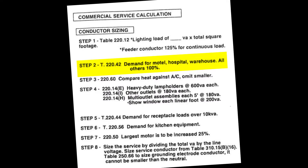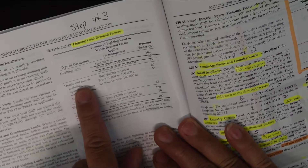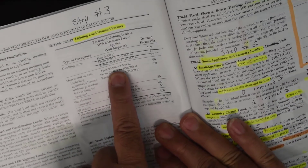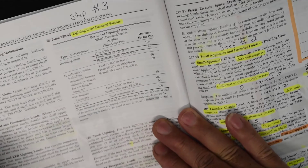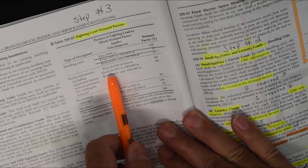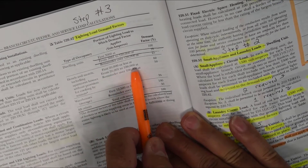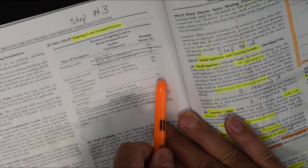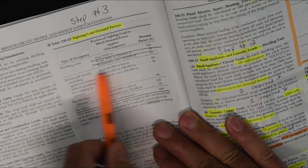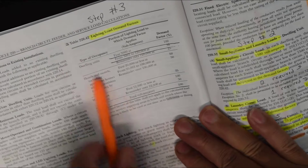Step 2 takes us to 220.42, which covers demand for hotels, motels, hospitals, and warehouses. All others are at 100%. For hotels and motels, the first 20,000 VA is at 60%, anything above 20,000 up to 100,000 is at 50%, and the remainder above 100,000 is at 35%. This is how you apply the demand reduction once you've tabulated everything.